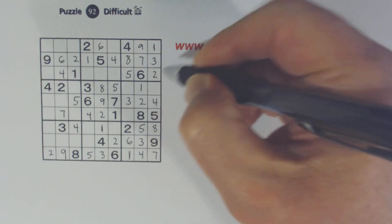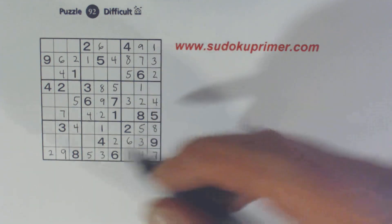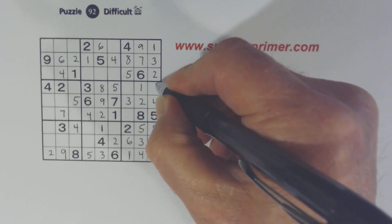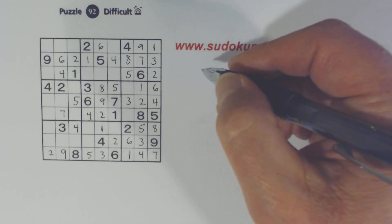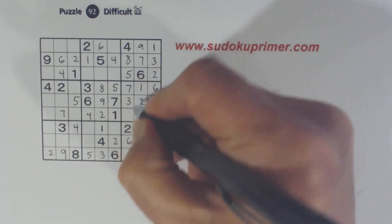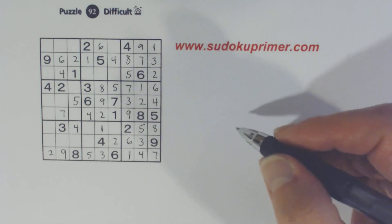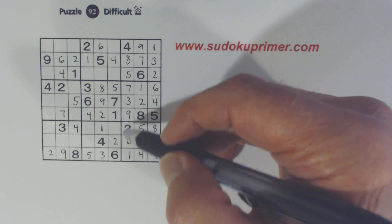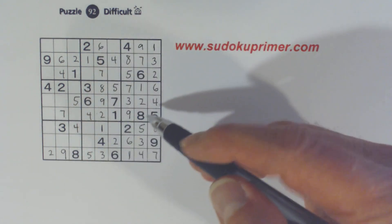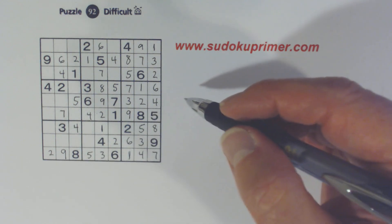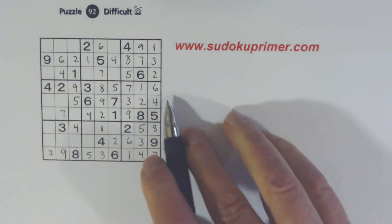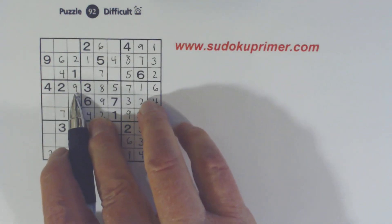Got a 1 — the only number left in that column — and a 6 here. These are 7 and 9, pretty obvious. Now we've got a 7 in box 2, the only number left in that column. Only number left in row 4 is a 9.